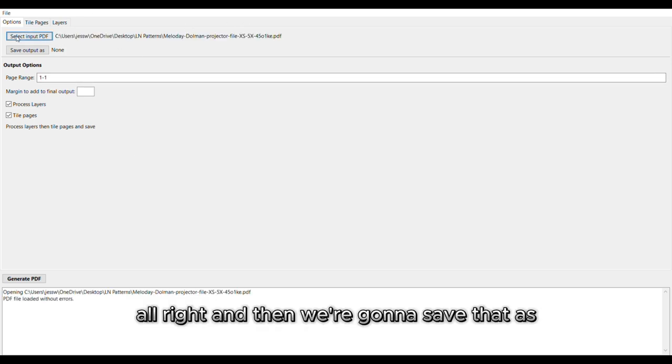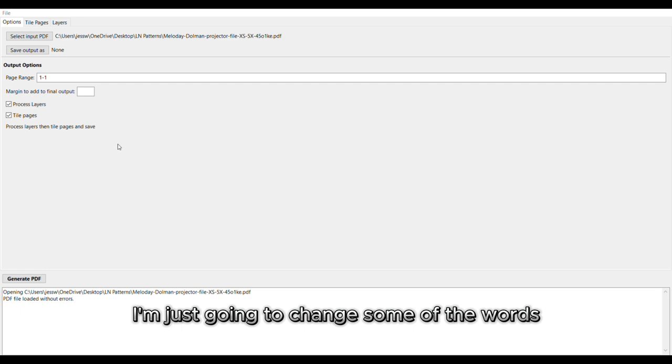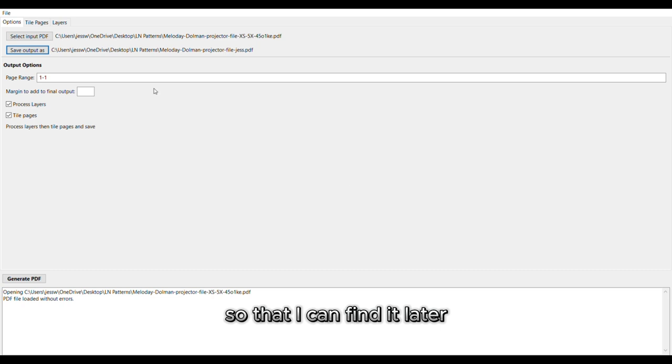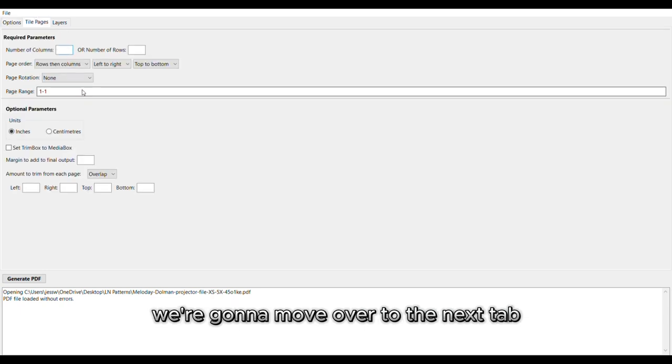And then we're going to save that as, I'm just going to change some of the words to have my name just to make it personal for me so that I can find it later since I am altering this for me. So after we got that all set, we're going to move over to the next tab and I'm going to add margins.